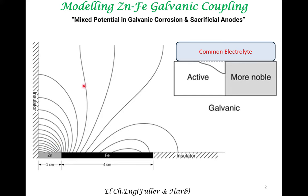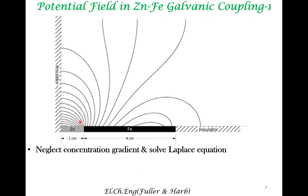So first, let us look at how we end up with these potential lines — the potential distribution in the electrolyte. Typically, we address these kinds of subject material in discussing current distribution in electrochemical systems. In this case, we neglect concentration gradient because that is not too significant in this system. And what you end up with is solving only the Laplace equation.